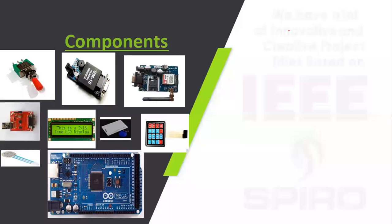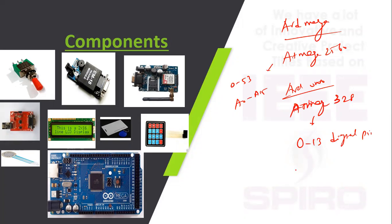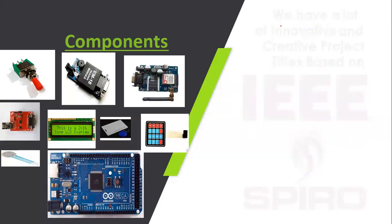For components, we are using Arduino Mega with chip name ATmega2560, and Arduino UNO with ATmega328. We are implementing communication using UART protocol. The next component is the RFID Reader — we are using the EM-18 model, a passive type with operating voltage of +5V DC.